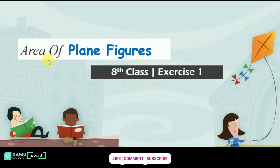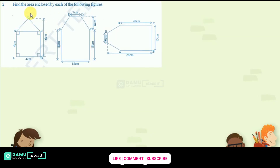In this module we are going to discuss area of plane figures, 8th class exercise 1. Our second question is: find the area enclosed by each of the following figures. The first shape given is a combination of a square and a triangle.